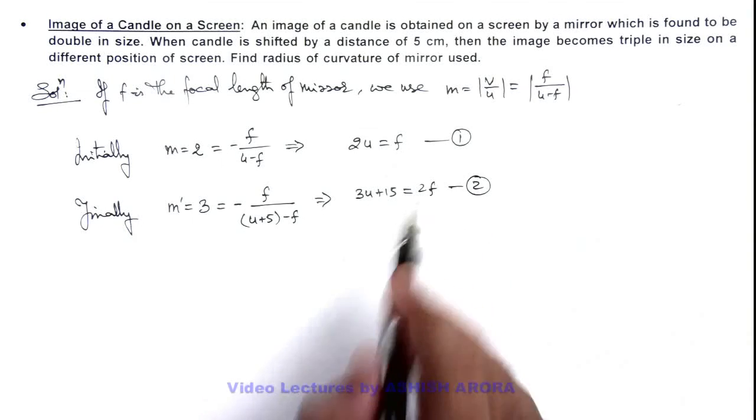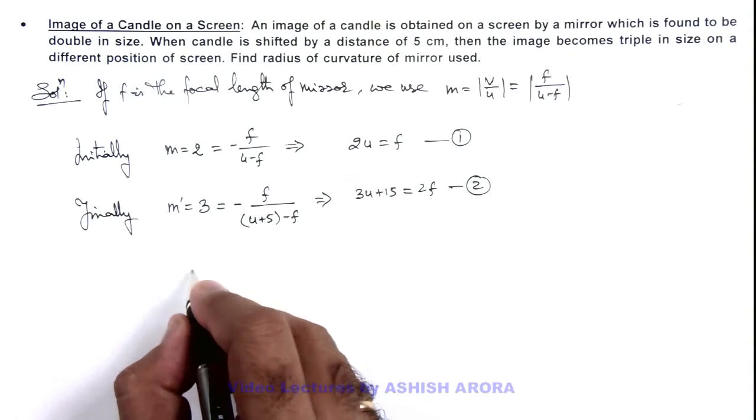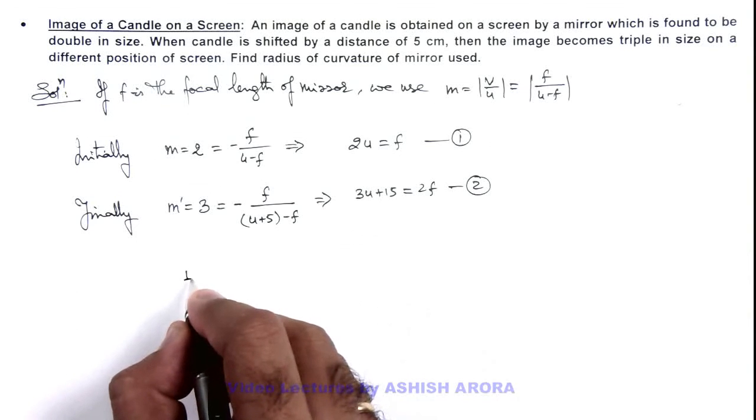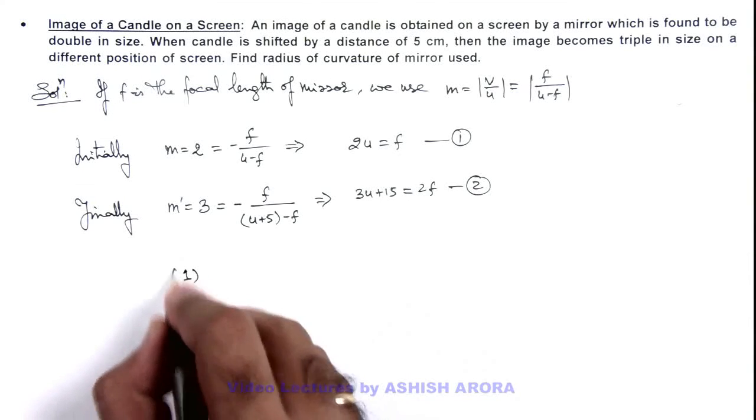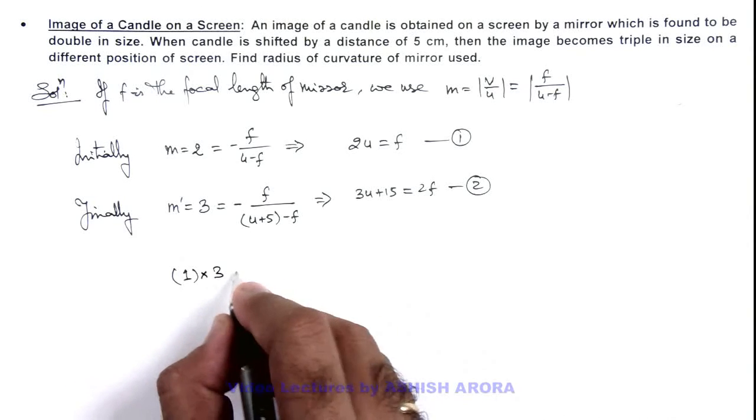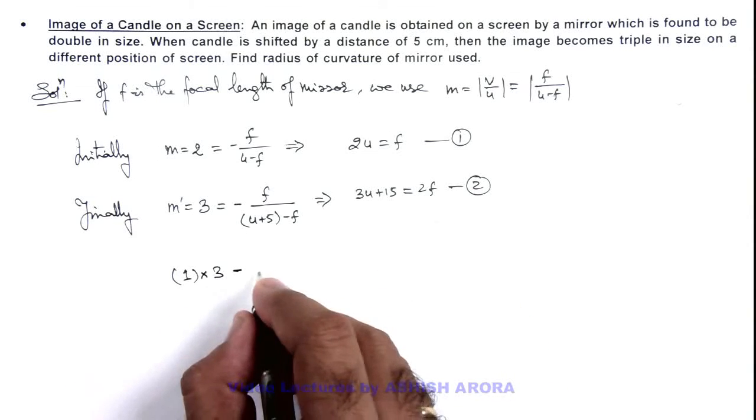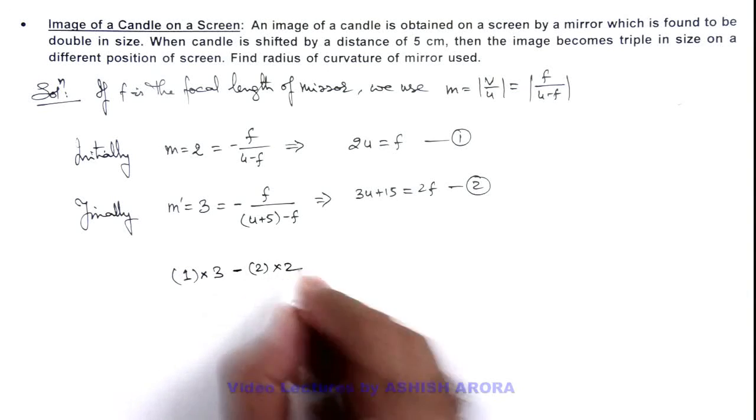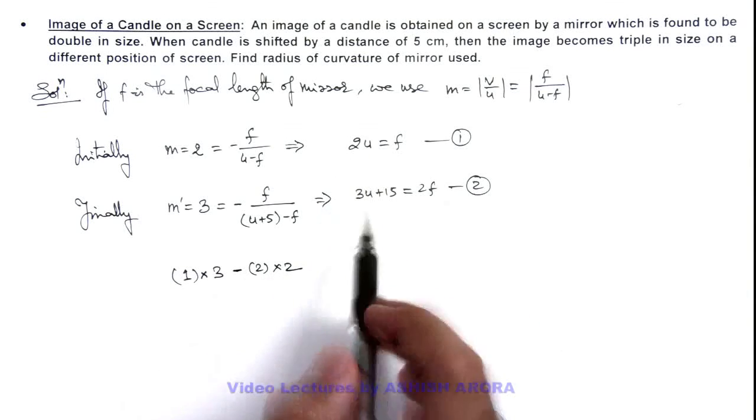From these two equations we can get the value of f. We can write equation 1 multiplied by 3 and we subtract equation 2 multiplied by 2. Then you can see the value of u gets cancelled out.